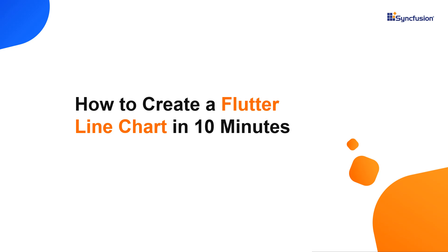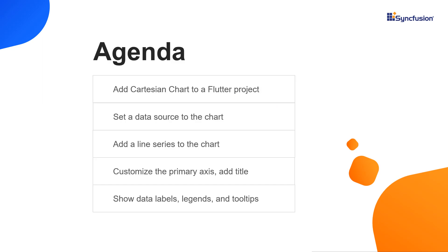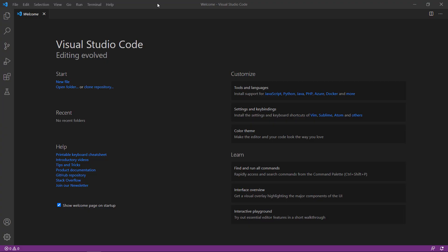Hi everyone. Welcome to this video on getting started with the Syncfusion Flutter line chart. You will see how to add the Syncfusion Flutter charts package to a Flutter project and add the Cartesian chart to the project. You will learn how to set a data source to the chart and how to add a line series to it. Then I will explain how to customize the primary axis, add a title, and show data labels, legends, and tooltips in the line chart.